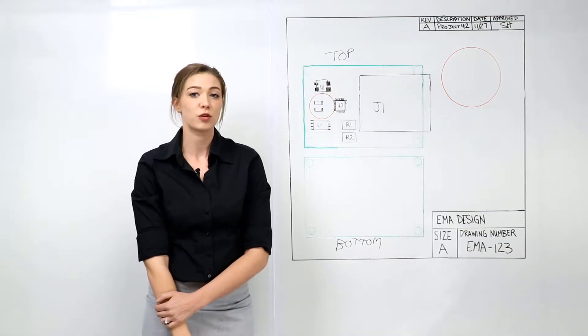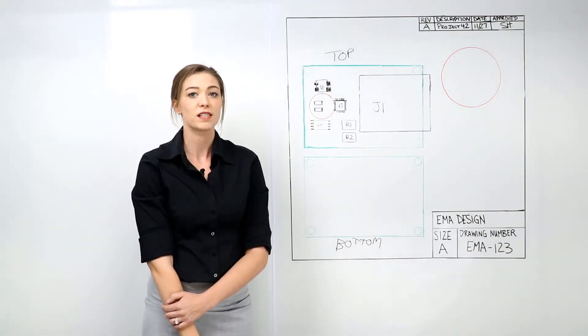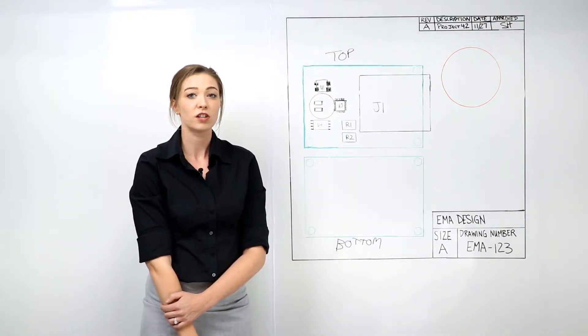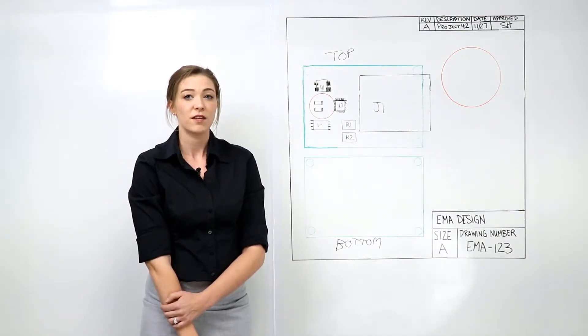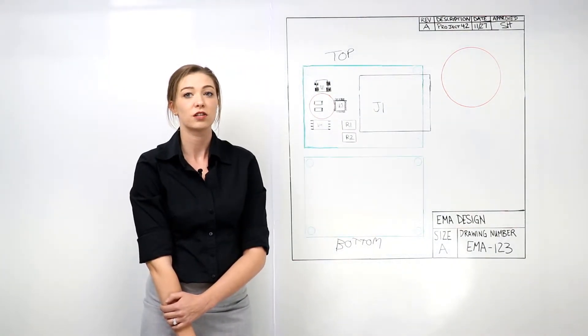Keep in mind the scale and legibility of the drawing. Many times this image will be printed and referenced throughout the assembly process. For large designs, 1 to 1 scale is appropriate. If the design is smaller, densely populated and has many surface mount parts, consider increasing the scale to 2 to 1 or even 4 to 1 to ensure legibility.